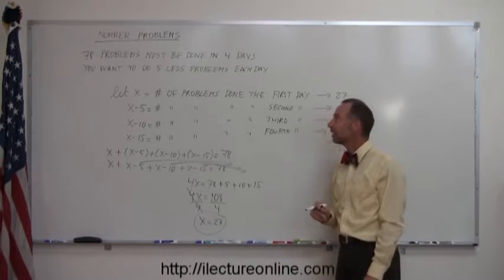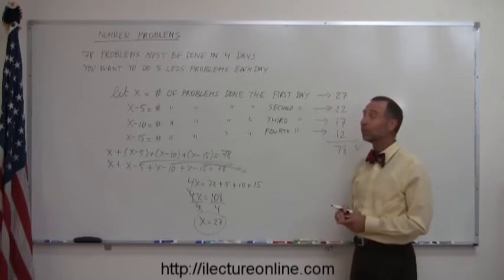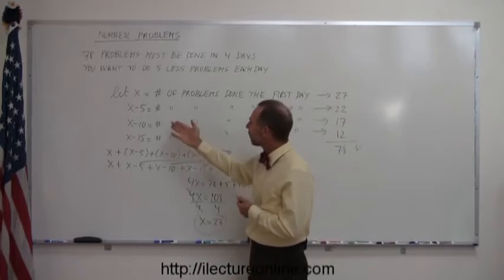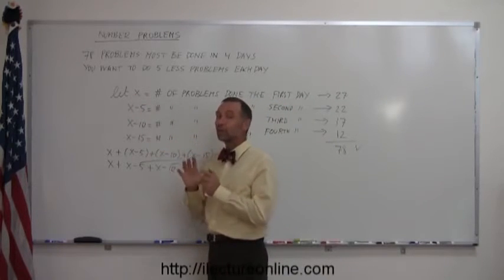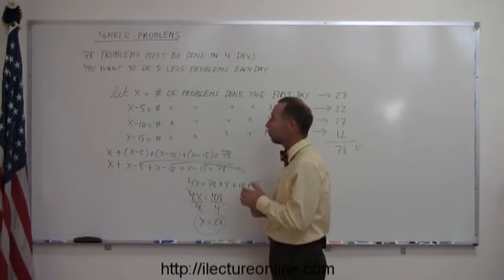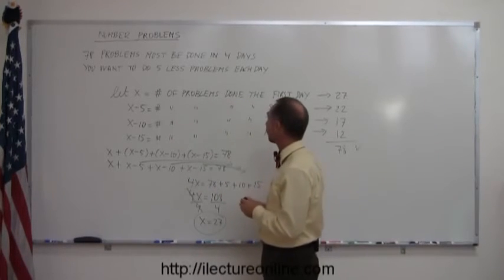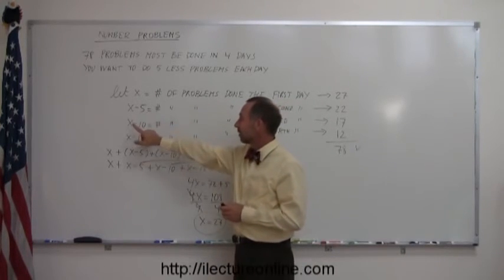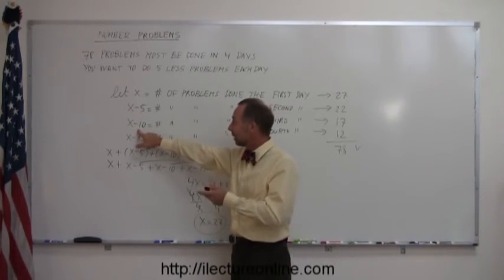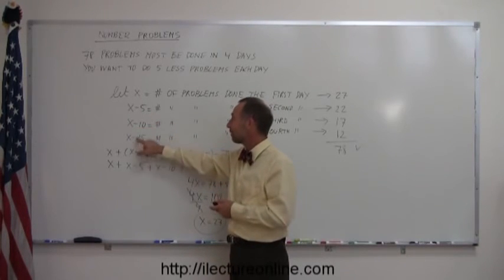So, here again, a very nice example of how you deal with number problems. Typically, again, in summary, always let x be the smallest number if possible. Or the first number, in this case, we'll let x be the number of problems on the first day. 5 less on the second, 5 less on the second day on the third, and 5 less on the third day on the fourth. Add them all up, should add up to 78. So, if you work the problems this way, they're actually pretty simple and pretty straightforward.